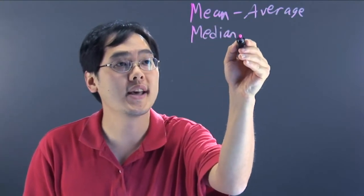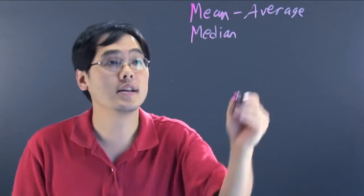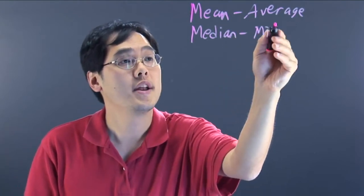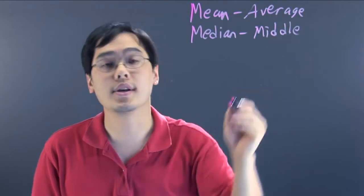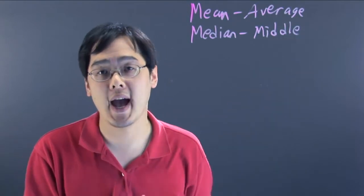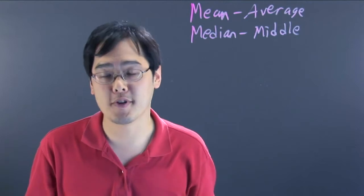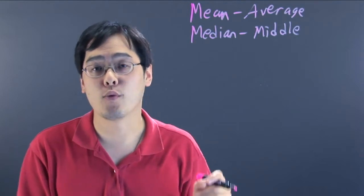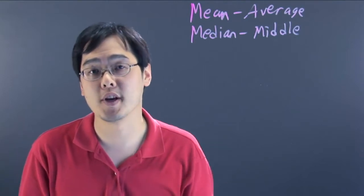Another one you may want to find is that of the median. Now the median is known as the middle value. What that's going to require you to do is you have to arrange all the values from lowest to the highest. And then if you have an odd number of points you can figure out what the number is in the middle and that'll be your median.